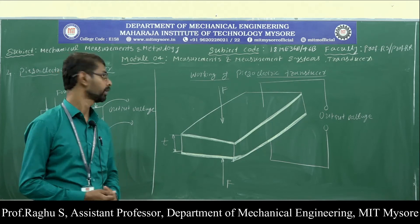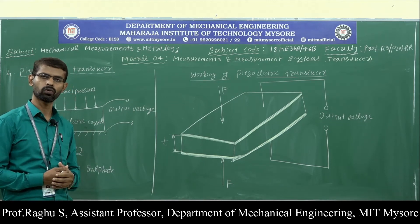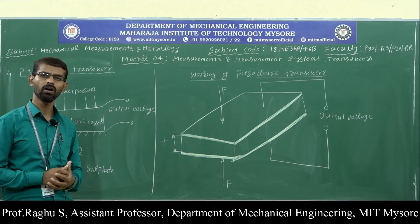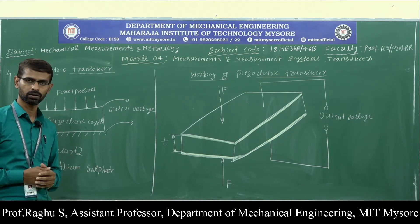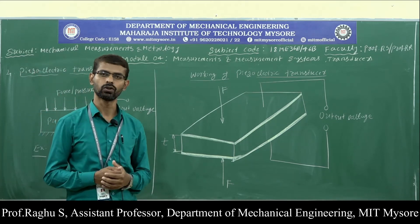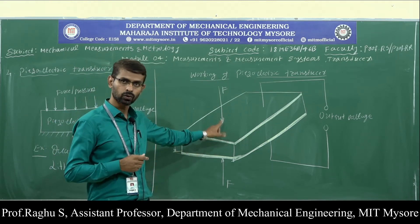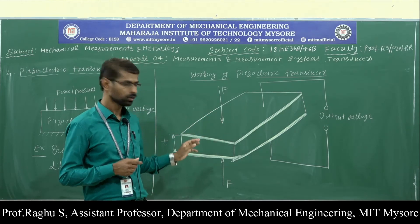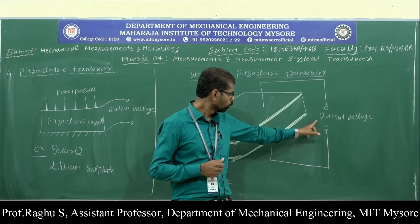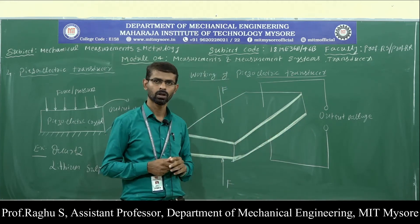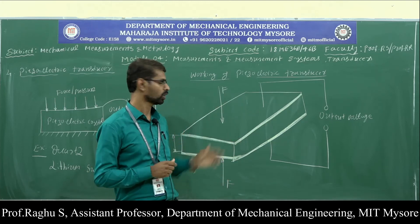Next, we will discuss the working of the physioelectrical transducer. A physioelectrical crystal is a material which produces electrical potential or voltage when it is subjected to force or pressure. Examples of physioelectrical crystals are quartz and lithium sulfate. When the physioelectrical material is subjected to force or pressure, a corresponding output voltage is produced, which is proportional to the applied force or pressure. This output voltage can be easily measured using a simple voltage measuring instrument and taken as the measurement of force or pressure.